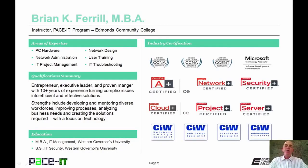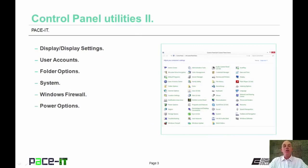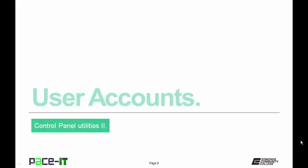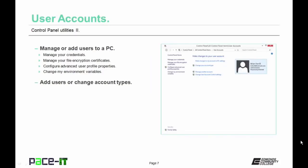I'm Brian Farrell, and welcome to PACE IT's session on Control Panel Utilities, Part 2. Today we're going to discuss some control panel utilities available in all versions of Windows. We begin with the Display Settings applet. This utility can control different display settings — you can adjust resolution, calibrate color, change display settings, and adjust ClearType text. Use caution if you're using a flat panel display as they have a native resolution; changing the resolution may result in a distorted image.